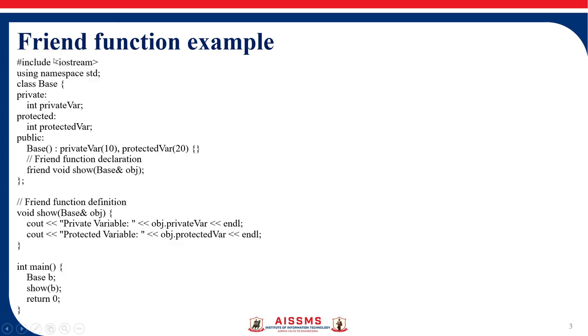So we are including all the header files, using namespace std. Then we have declared one class Base and a private member private variable and one protected variable. And in the constructor we have provided the variable value for private variable as 10 and for protected is 20.